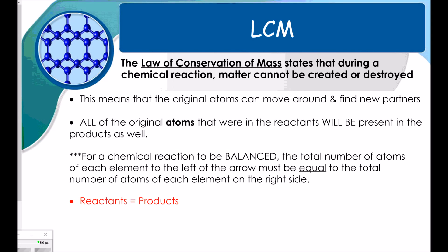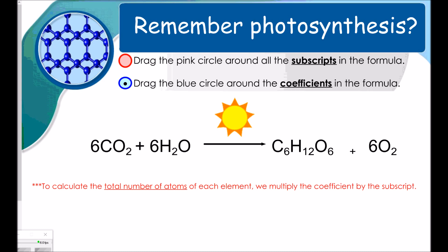The law of conservation of mass states that during a chemical reaction, matter cannot be created or destroyed. This means that the original atoms can move around and find new partners. All of the original atoms that were in the reactants will be present in the products as well. For a chemical reaction to be balanced, the total number of atoms of each element to the left of the arrow must be equal to the total number of atoms of each element on the right side. So your reactants must equal your products.